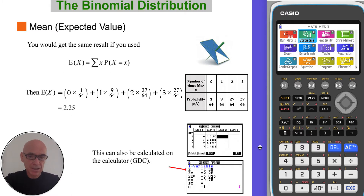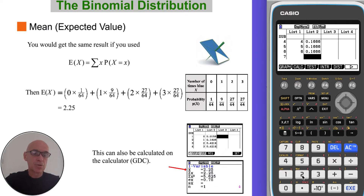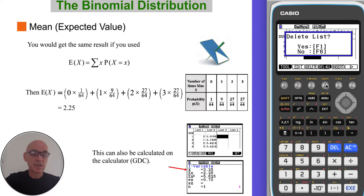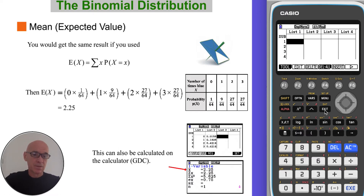You could have also calculated that value on your calculator. From the menu, press option 2 for statistics, and we need to clear the lists — press F6, followed by F4 for delete all, F1 to confirm the deletion of that list, and scroll across and repeat the process: F4 and F1 to confirm.